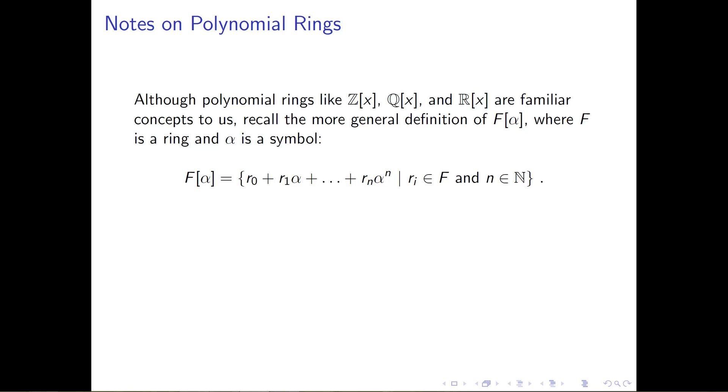To begin, I would suggest going back and looking at the video on adjoined notation if you are unfamiliar with things like Z adjoined x or Q adjoined x and what is meant by that. But just to review, we've got the formal definition of the polynomial ring F adjoined α, where F is some sort of ring and α is just some sort of symbol. α can really be anything. Here, we're using x as though it's a variable. And this is the collection of all linear combinations of an element of the ring F and some sort of power of the element α.